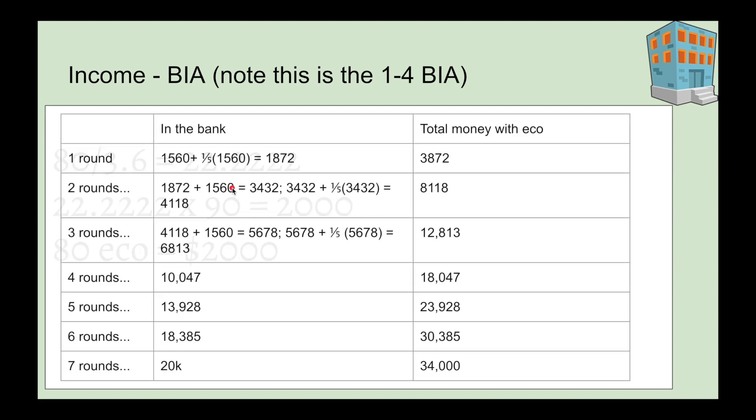We're looking at money in the bank and the total money you're going to get with eco. In the bank, on round one, if you get up the bank as soon as the round starts, you're going to get $1872. After two rounds, $4118. After three rounds, $6813.